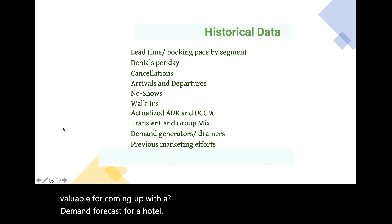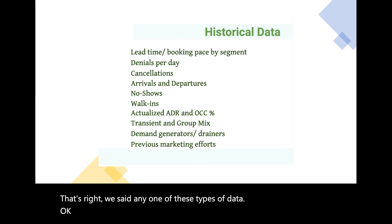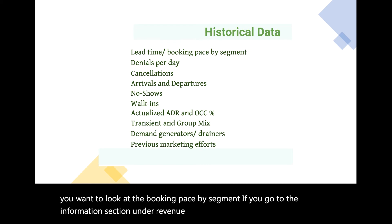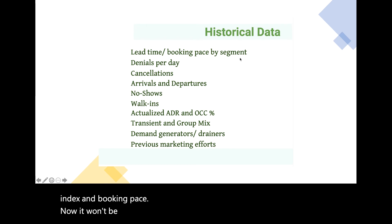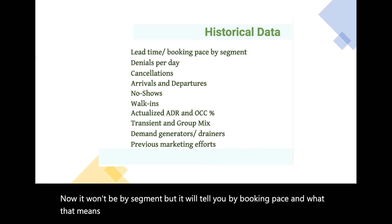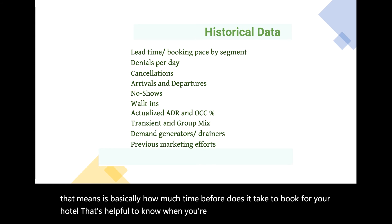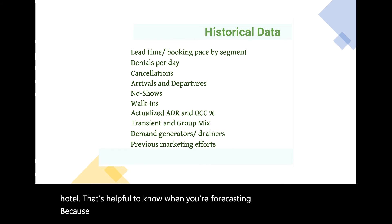Some of this data can be found in your sim. For instance, if you want to look at the booking pace by segment, go to the information section under revenue optimization — you can find the market index and booking pace there. It won't be broken down by segment, but it will tell you booking pace, which means basically how much time in advance guests book for your hotel. That's helpful to know when forecasting.